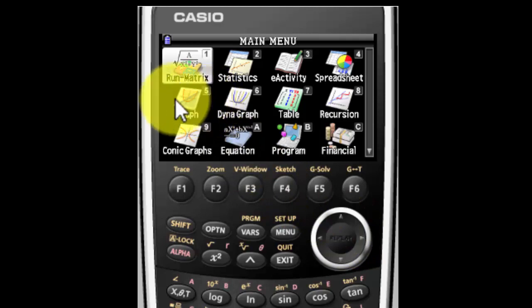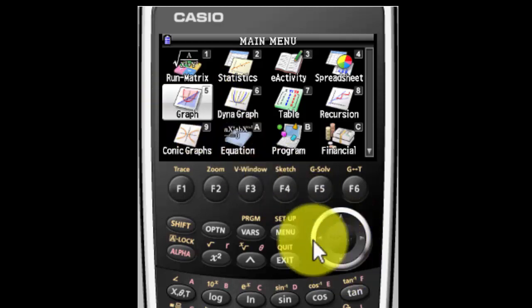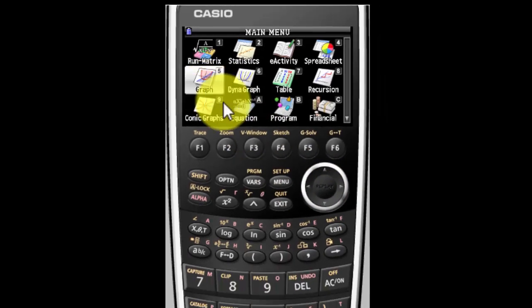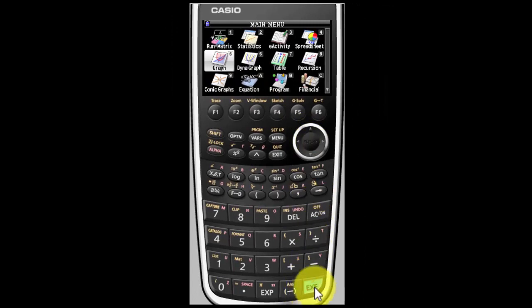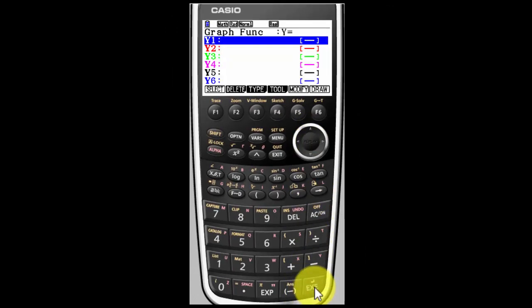Since we want a graph, we're going to look for the graph icon. For mine, it's number 5. Yours may be a different number. Highlight that icon and hit Execute and you're in the graphing function.